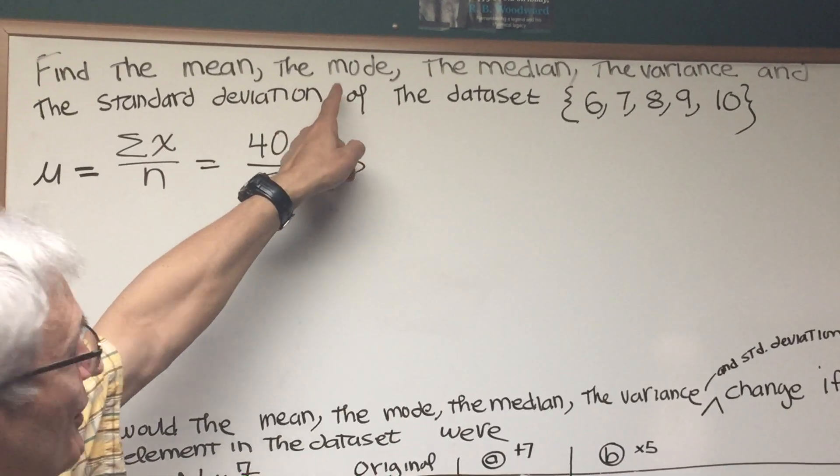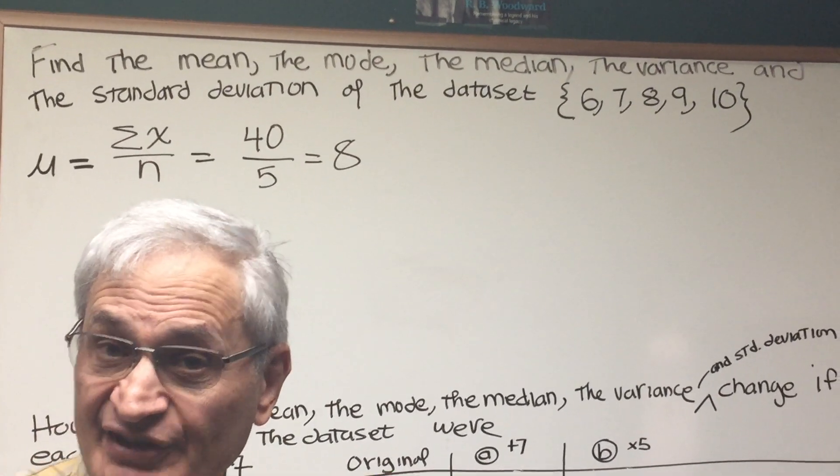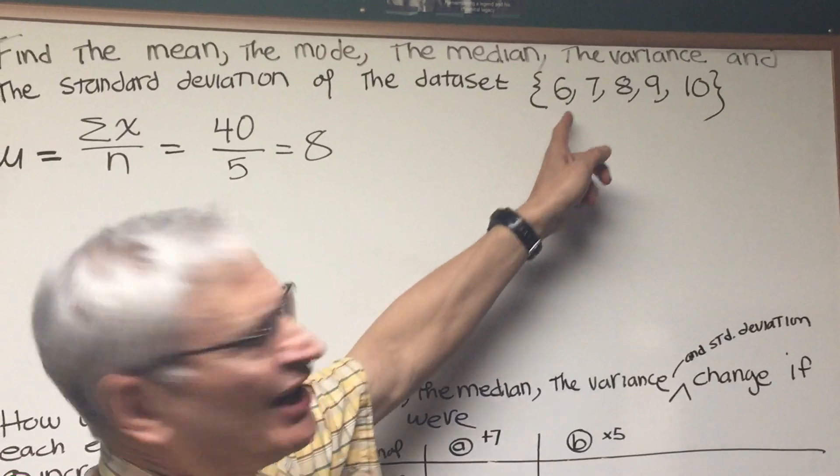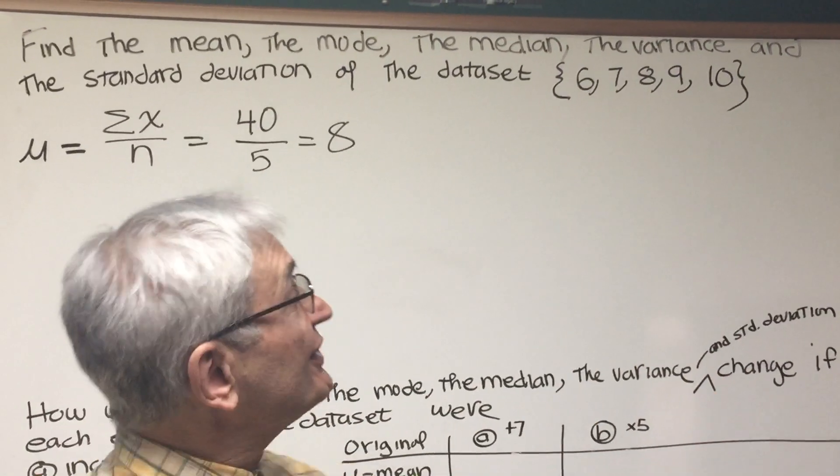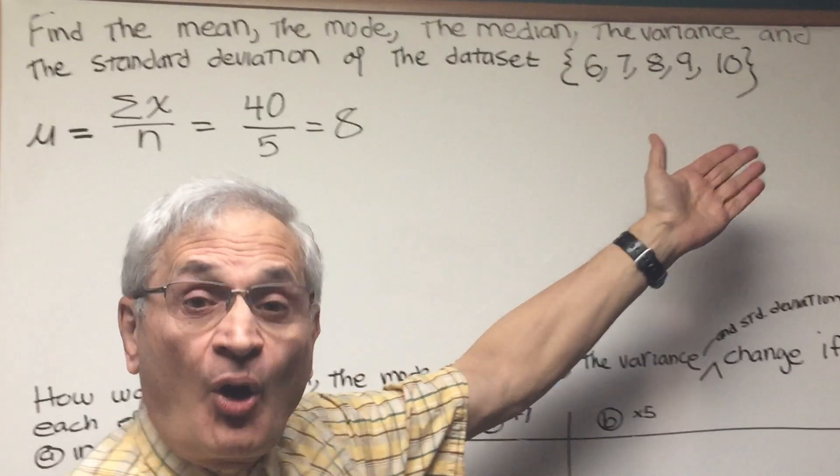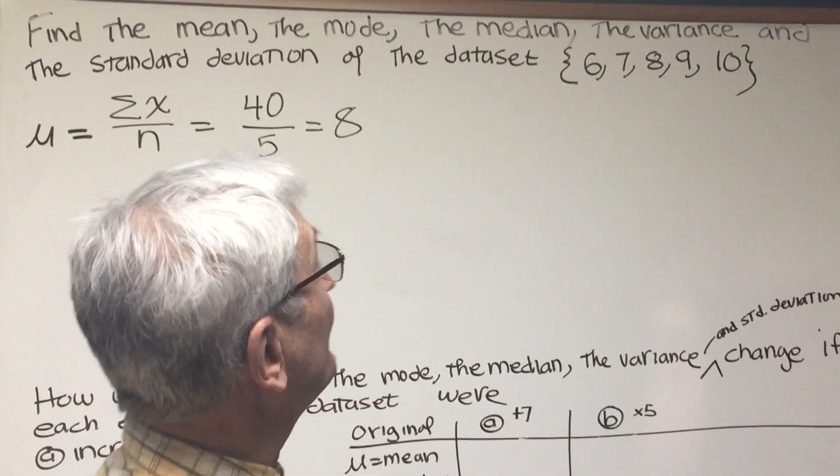Okay, the mode is defined as the number that occurs most often in a data set. Well, if you look at this data set, there's no one number that occurs most often. So what we can say about this is that it's all mode or no mode. Same thing. Take your choice.